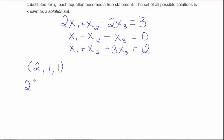I have 2 times X1, which is 2, plus X2, which is 1, minus 2 times X3, which is 1. So this is 4 plus 1 is 5, minus 2 is 3. And that's what the first equation should equal.